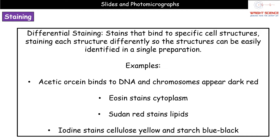Here are four examples of stains used in differential staining. Acetic orcine binds to DNA, making chromosomes appear dark red under the light microscope. Eosin stains the cytoplasm so we can see detail there. Sudan red stains lipids. And iodine — the iodine solution stains two key parts of plant cells differently: it stains cellulose in cell walls yellow, and stains any starch granules blue-black. So adding iodine to plant cells lets us see those two different structures clearly based on their different colours.